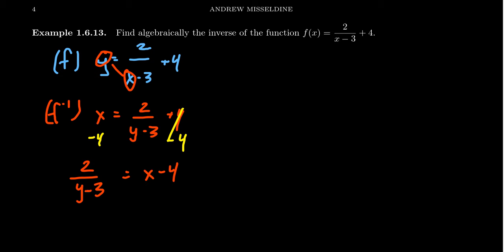One can accomplish that by a couple different techniques. In this situation, I'm going to kind of treat the x minus 4 as a fraction, x minus 4 over 1. That way, I can cross-multiply. You multiply the 1 by the 2, and you're going to multiply the y minus 3 by the x minus 4. And if we do that, that'll then give us 2 times 1 is equal to x minus 4 times y minus 3.